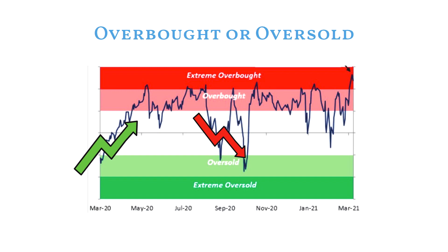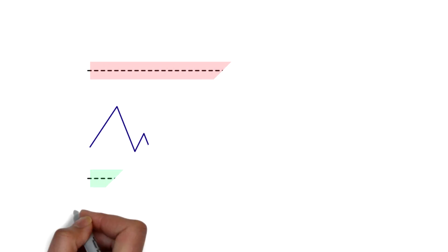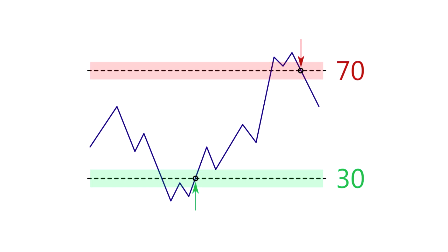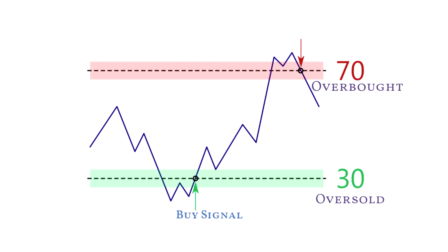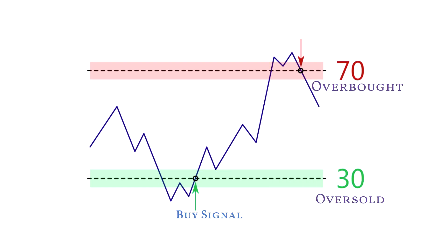Some traders take an RSI value below 30 as oversold, so when RSI crosses back above 30 it generates a buy signal for them. Exit signals work in the same way except traders use overbought values. Technically, traders view an RSI value above 70 as overbought, so when RSI crosses back below 70 they typically see it as a potential exit signal.